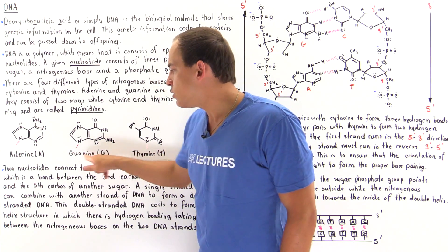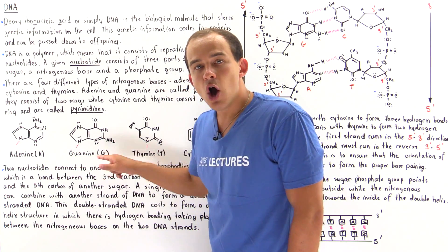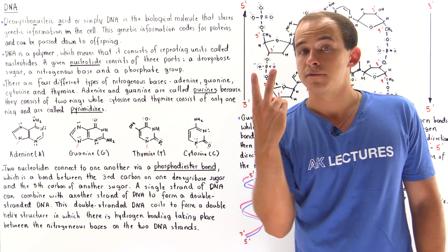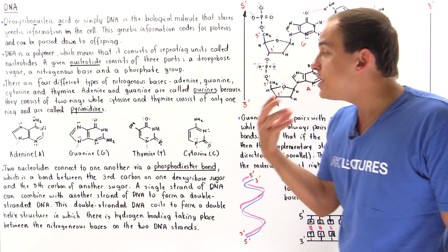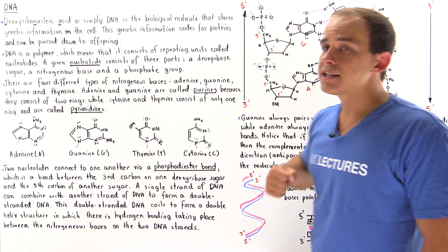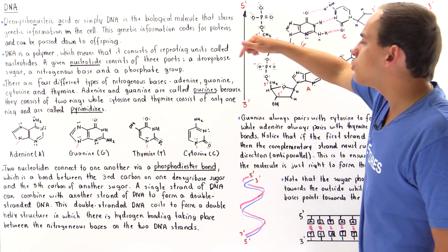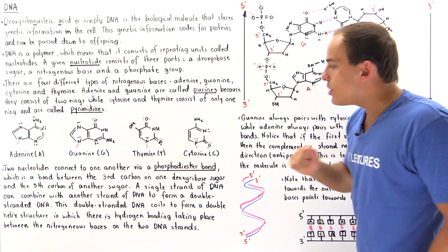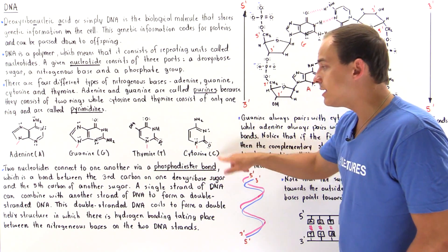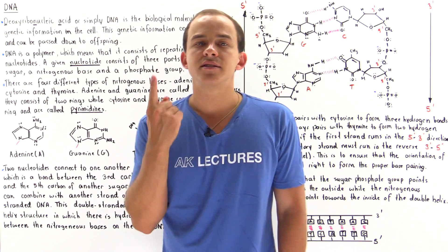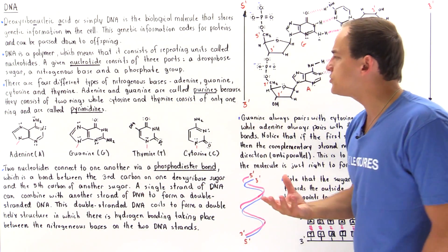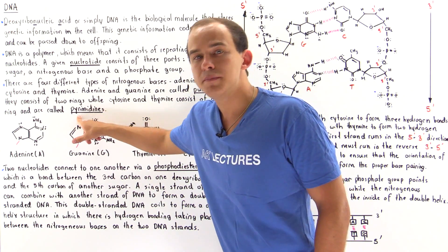Adenine and guanine — or simply A and G — are two types of nitrogenous bases that consist of two rings. These types of nitrogenous bases that consist of two rings are known as purines. Thymine and cytosine — or T and C — consist of only a single ring structure, and these types of nitrogenous bases are known as pyrimidines.